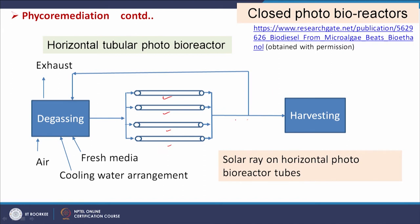Some harvested biomass and water is recycled. Degassing is needed because algae generate oxygen in presence of sunlight — oxygen dissolved in the water must be removed by sending air through a degassing section. Cooling water arrangement is also required to maintain temperature, since sunlight raises the temperature of the reactor. This is the complete flow sheet of a solar-array horizontal photobioreactor tube system.